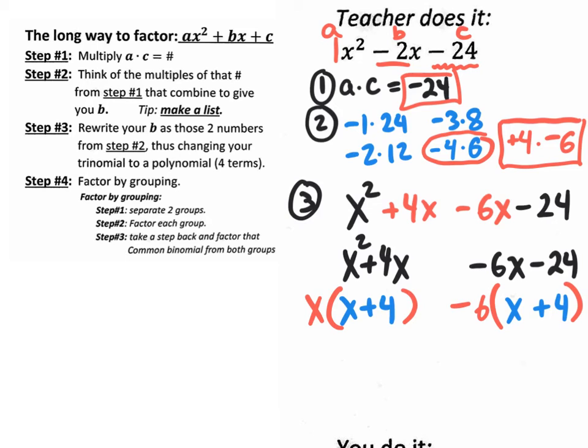And that's beautiful because that's what factoring by grouping is all about, to be able to get the same binomial here and the same binomial there. That way you could pull out what's in common in both groups. So we're going to put that x plus 4 out here in the front.